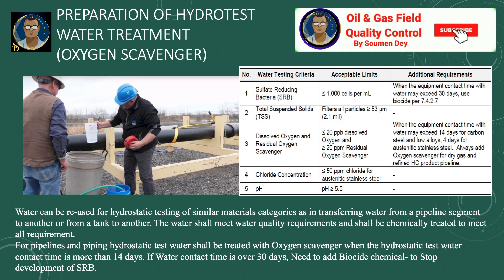Multi-component products as provided by chemical vendors are exempt from the pre-mixing requirement. Now let us discuss again the limits of the components present in the water. Sulfate reducing bacteria (SRB) count should be less than 1000 cells per milliliter; when equipment contact time with water may exceed 30 days, use biocides as required. Total suspended solids (TSS) — filters all particles greater than 53 micrometers or 2.1 mm. Dissolved oxygen should be less than 20 ppb, and residual oxygen scavenger greater than 20 ppm when equipment contact time exceeds 14 days for carbon steel and low alloys, and 4 days for austenitic stainless steel. Always add oxygen scavenger for dry gas and refined hydrocarbon product pipelines.